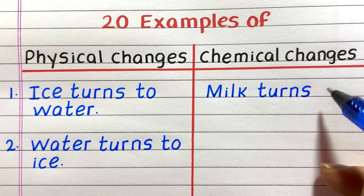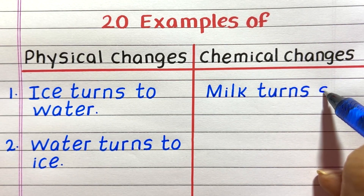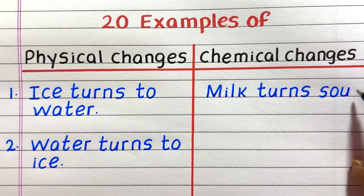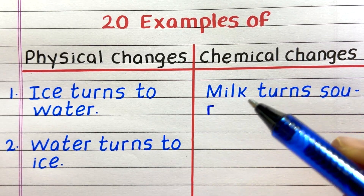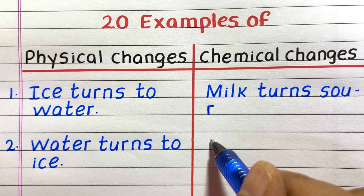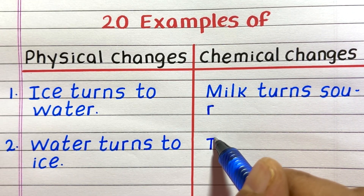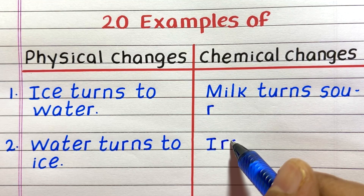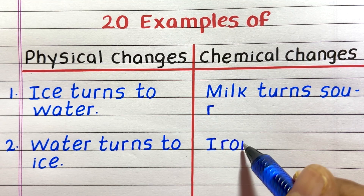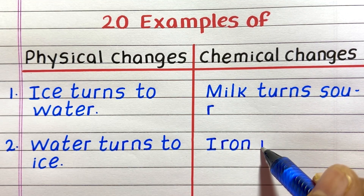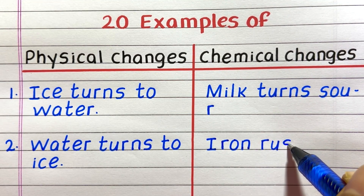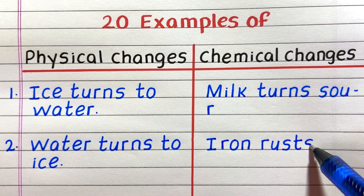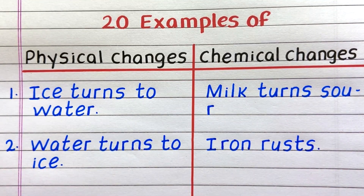First example of a chemical change is milk turns to curd. Second, iron rusts.